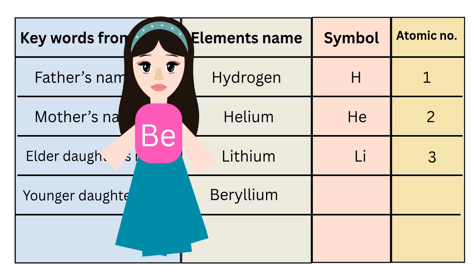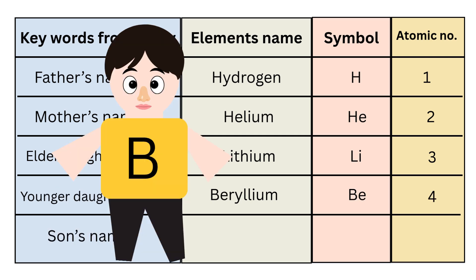For the fourth element, remember the younger daughter's name, that is Beryllium. So the element name is Beryllium, symbol is Be, and atomic number is 4. For the fifth element, remember the son's name, that is Boron. So the element name is Boron, symbol is B, and atomic number is 5.